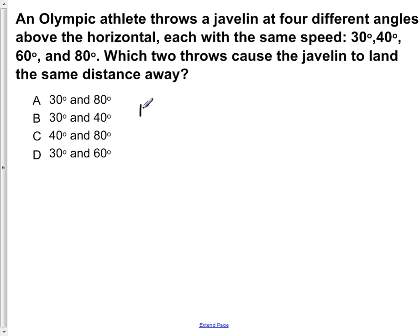Remember from before that the maximum horizontal range is given by the equation R equals v naught squared sine of 2 theta all over g. Now for this equation, v naught is constant, so v naught squared is constant, and g is a constant also.